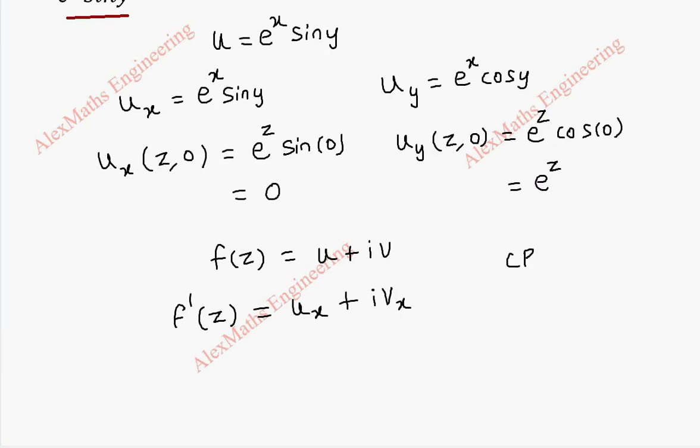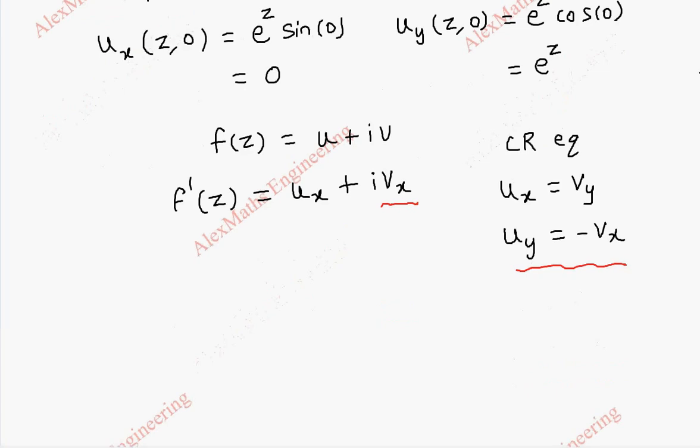From Cauchy-Riemann equations, we have u_x = v_y and u_y = -v_x. So v_x can be replaced as -u_y. Therefore, f'(z) = u_x - i*u_y.